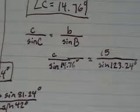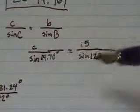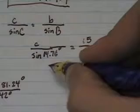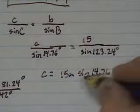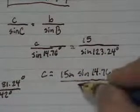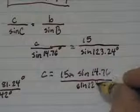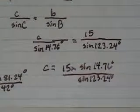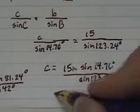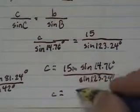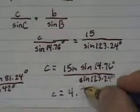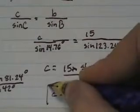Now, multiply by sine of 14.76, you get C equals 15 times sine 14.76 over the sine of 123.24 degrees, and when you plug all of that in, you're going to get side C equals 4.57 meters.